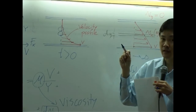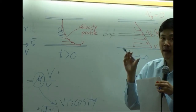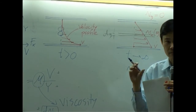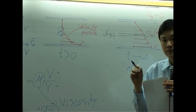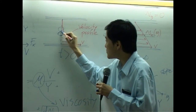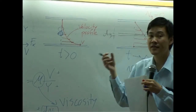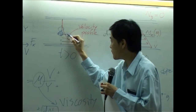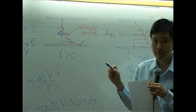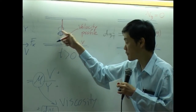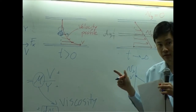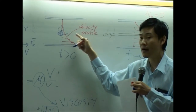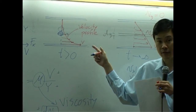According to physics, anything with mass that moves should have momentum. So this part of the fluid has some certain value of mass, and it has some certain value of velocity. Therefore, this part of the fluid should have momentum. The momentum is basically mass times velocity, mv.